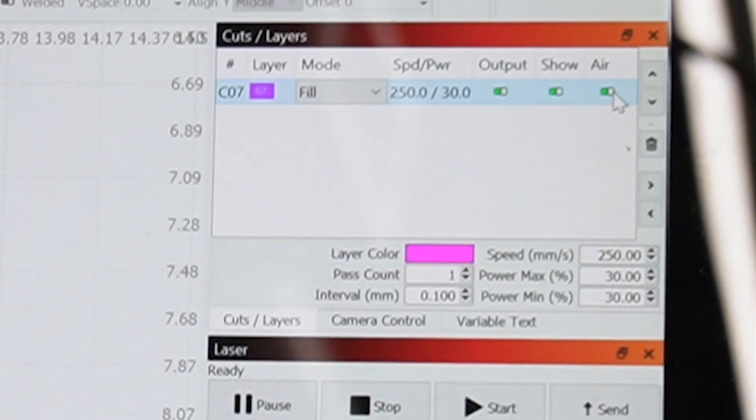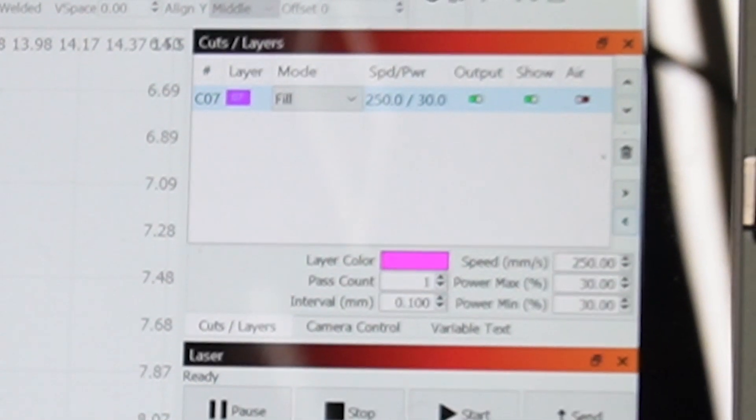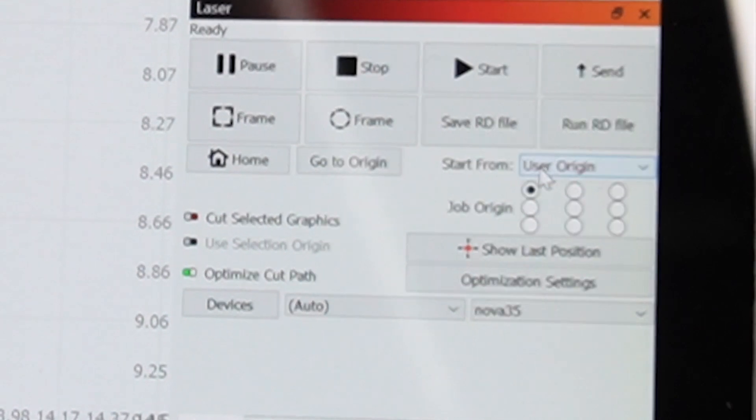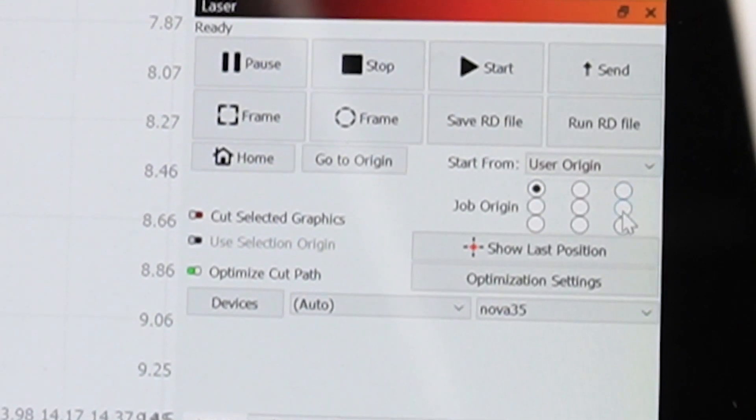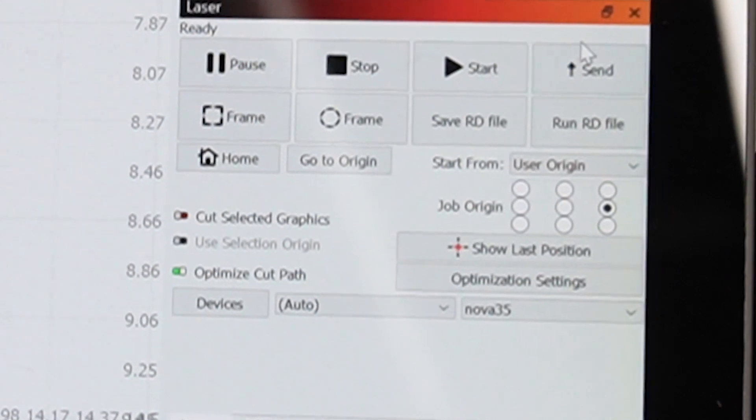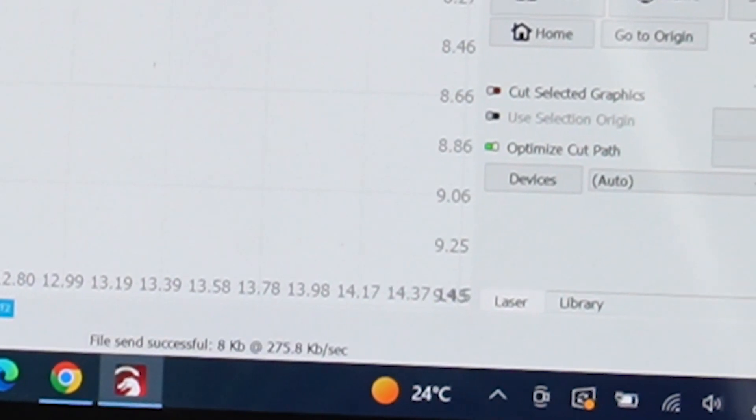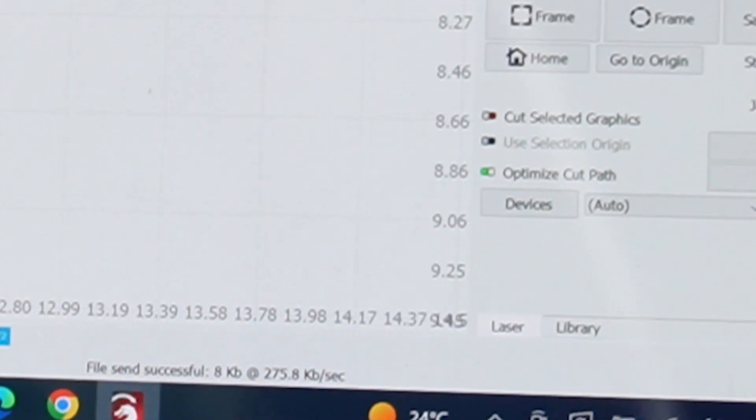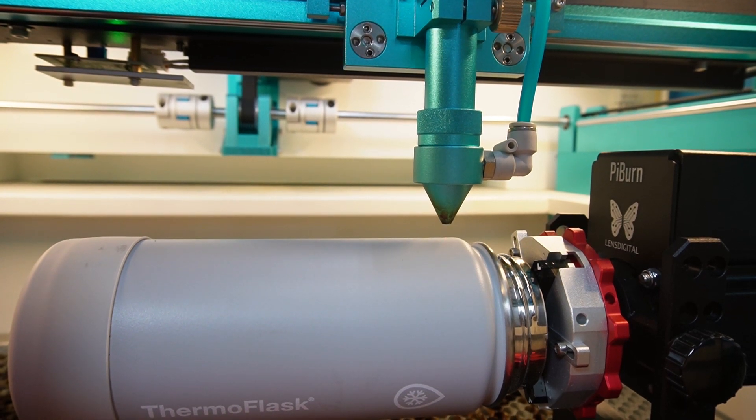I'm going to turn my air off. I feel like that's not necessary. I'm going to set my start from user origin and my job origin right side middle. And then I will send the job. So we should be good to do our engrave now. Ready to go. Fire lasers.